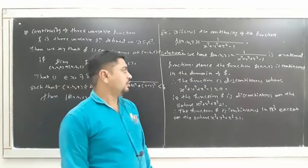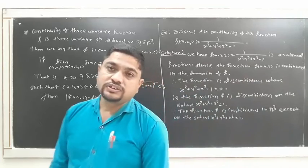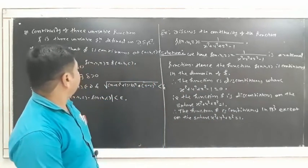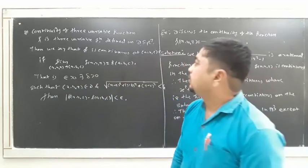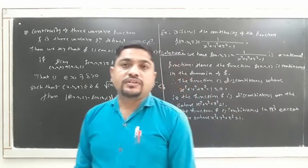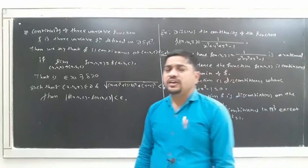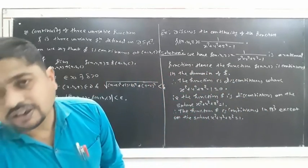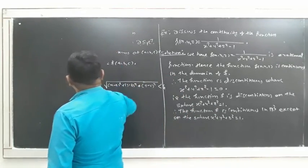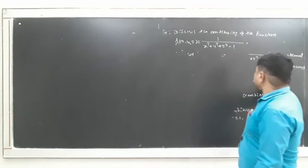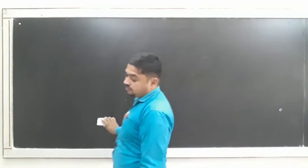Very simple example. So up to this we discussed the continuity of the composite function and the continuity of the three-variable function. Similarly, you can discuss the continuity of the four-variable, five-variable, six-variable, seven-variable functions — that is, all these can be discussed for the n-variable function. So we write the general or vector form of continuity.